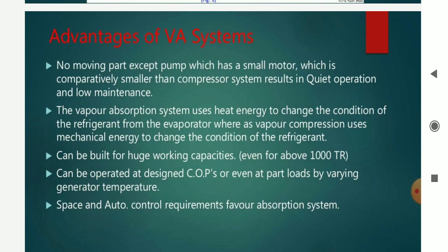Compared to Vapor Compression Refrigeration, the Vapor Absorption System has significant advantages. The compressor is replaced by the absorber and condenser, and gravity and force are used to circulate the ammonia vapors, so there are no mechanical moving parts in a pump or motor, which makes it much smaller than a compressor system and results in quiet operation. The Vapor Absorption System uses heat energy to change the condition of the refrigerant, whereas the Vapor Compression System uses mechanical energy. It can be built for huge working capacities up to 1000 tons, and it can be designed to achieve a good coefficient of performance even at part load by varying the generator.